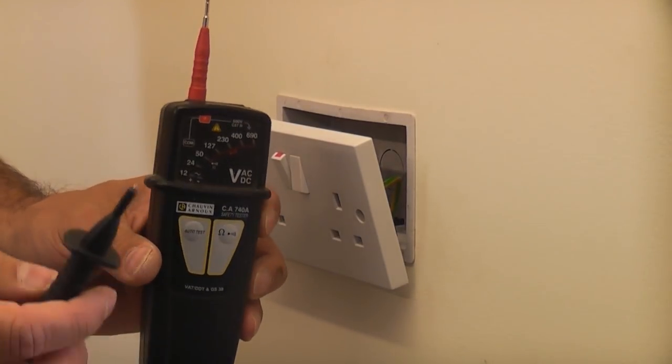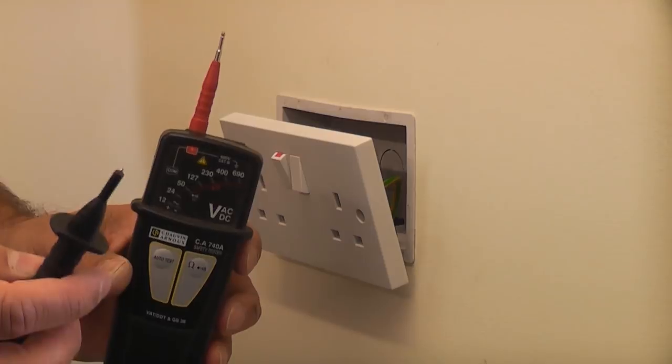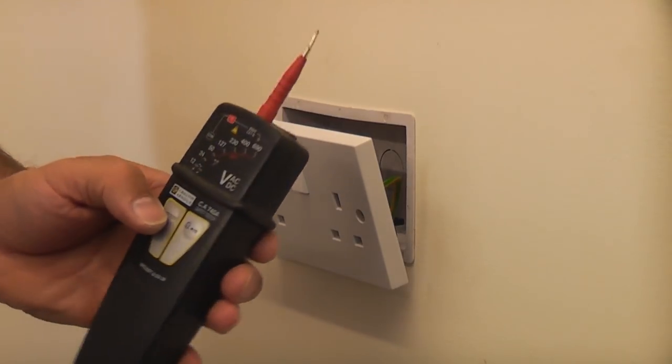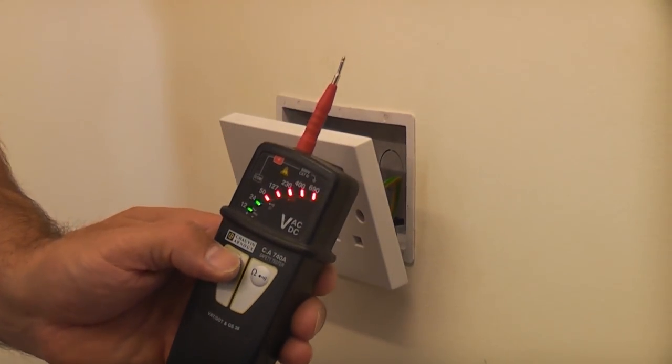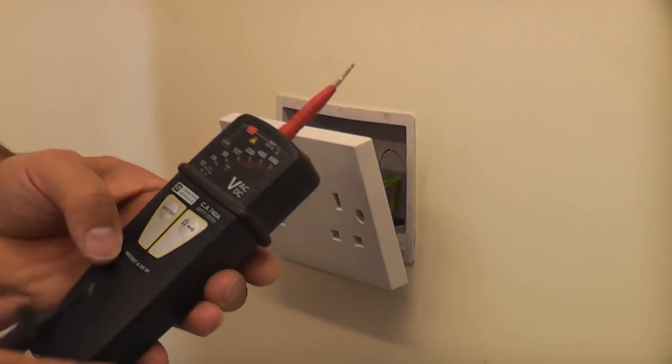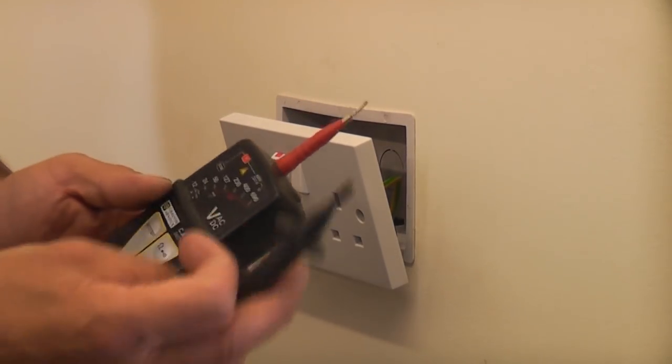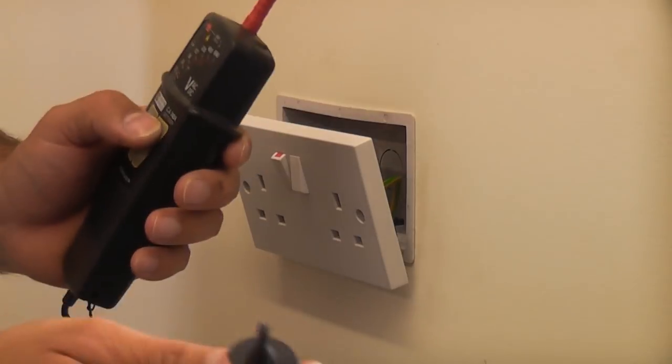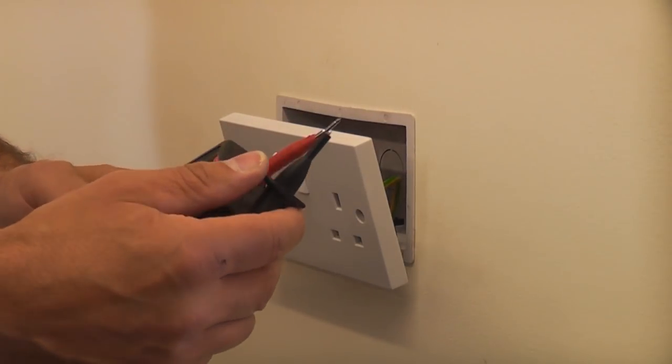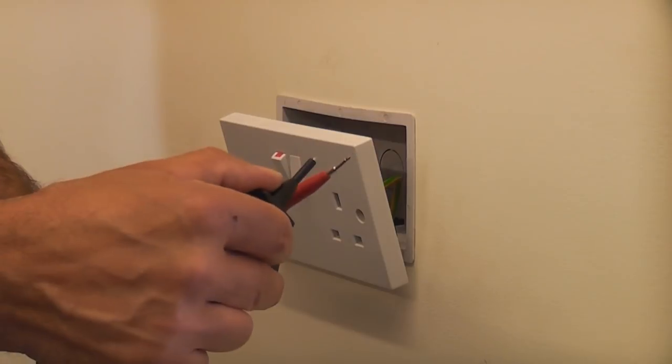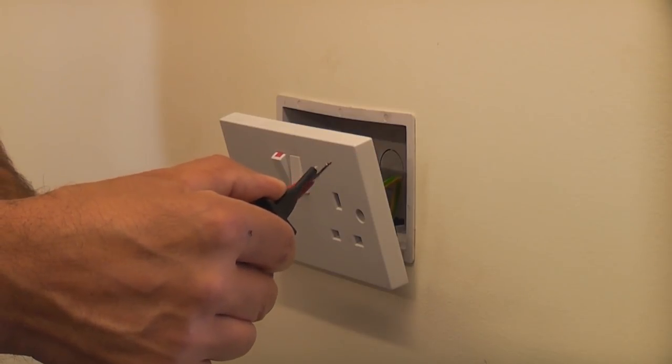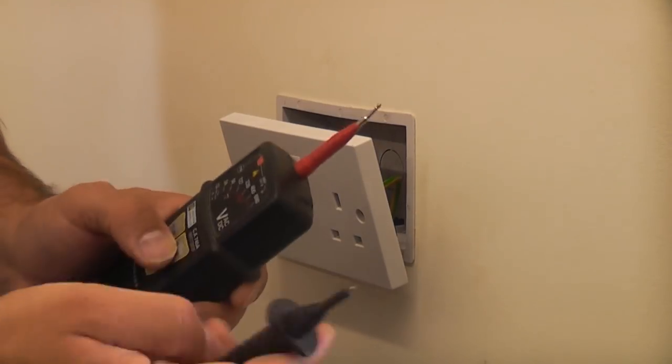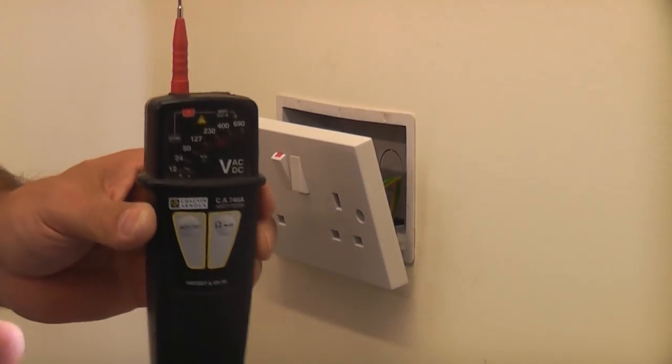I've now got an approved voltage tester which I'm now going to check is working. I'm going to press the auto test button and you can see that is working. I'm also going to touch the probes together and check continuity to ensure that the probes are in good working order. I'm going to press the continuity button and touch the probes together.